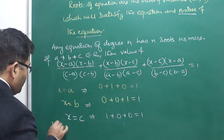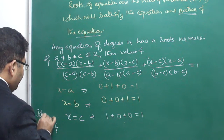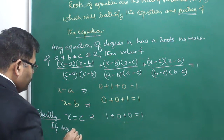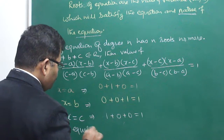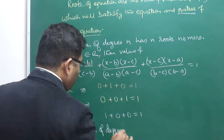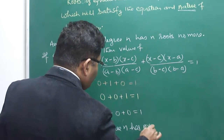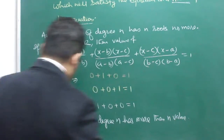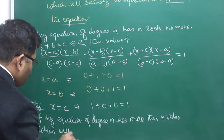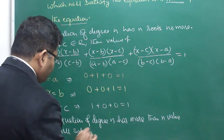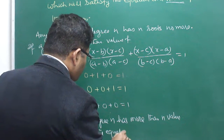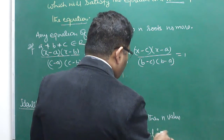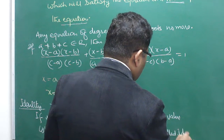This is called an identity. If any equation of degree n has more than n values which will satisfy the equation, then it is called an identity.